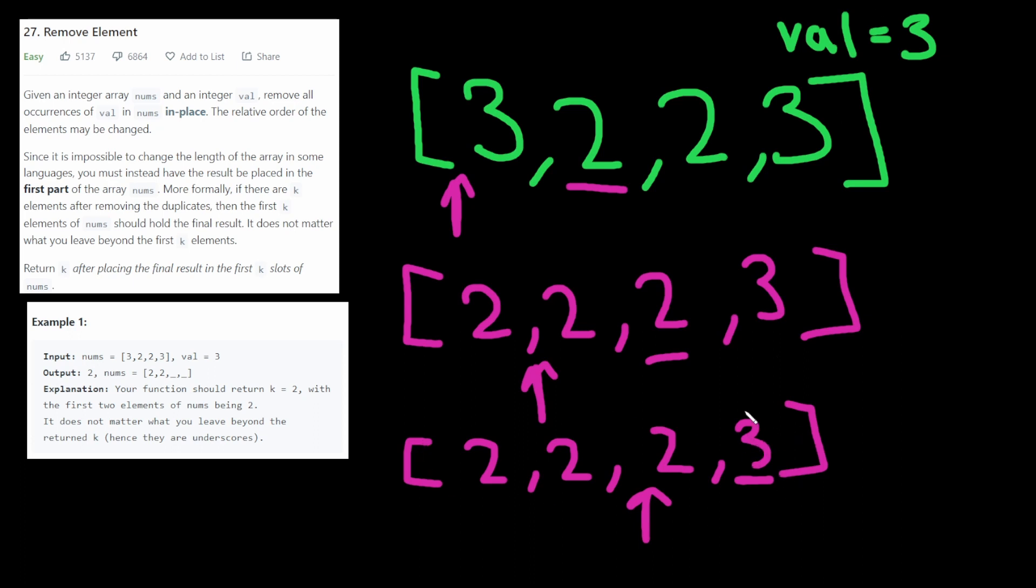So now the input array that we have has been mutated and is now 2223. And we return insert index, which is two, which specifies the number of elements that do not match val.